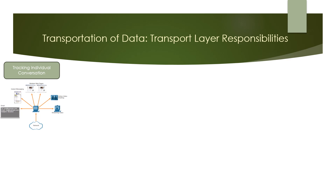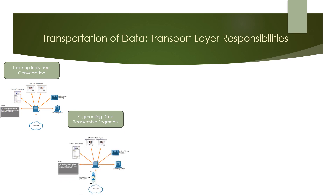The second responsibility is segmenting data and reassembling segments. It is the transport layer's responsibility to divide the application data into appropriately sized blocks. Depending on the transport layer protocol used, these blocks are called either segments or datagrams. The transport layer uses different blocks for each conversation.